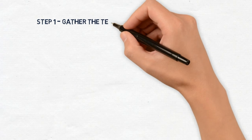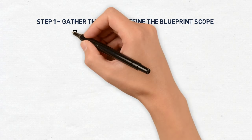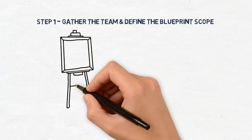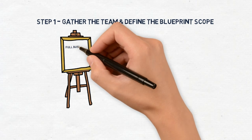Building your service blueprint. Step 1. Gather the team and define the service blueprint scope. The goal of the service blueprint is to have a full picture of the business, so it's important to have the stakeholders involved who are experts in their functional areas.